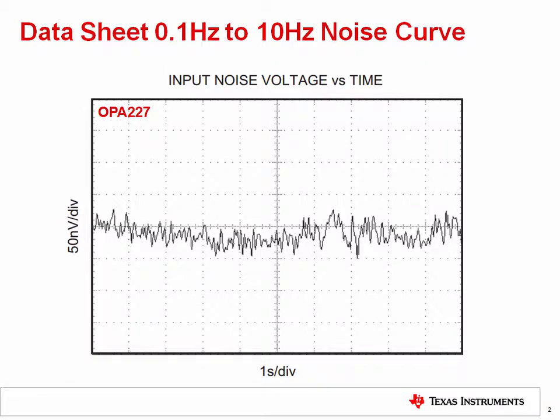Throughout this video series on noise, we have mainly discussed op amp noise spectral density curves. Most amplifiers also have a 0.1 Hz to 10 Hz noise plot, and some data sheets also list the 0.1 Hz to 10 Hz peak-to-peak noise in the electrical characteristics table. The objective of these curves is to provide a quick and easy-to-understand representation of 1/f noise at low frequency. It is better to directly compare op amp spectral density curves or do a full analysis, as 1/f noise curves are always referred to the input, and output noise is determined by multiplying by the circuit's noise gain.